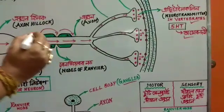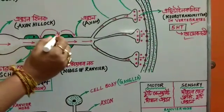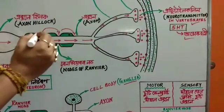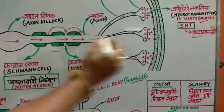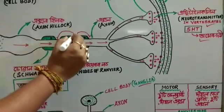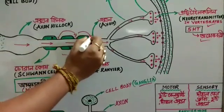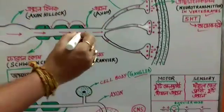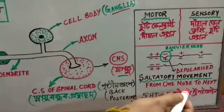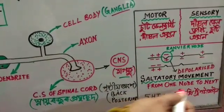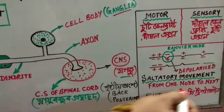This jumping movement — from one node to the next — is called saltatory movement. The signal moves node to node, which is what saltatory conduction means. This makes the transmission of nerve impulses significantly faster.